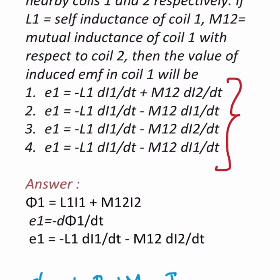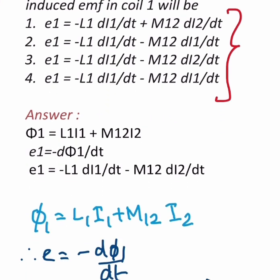So that is M12 dI2/dt, and because of itself is L1 dI1/dt, and both are with negative sign. This is a direct formula given in NCERT book.